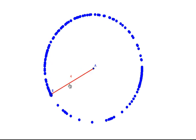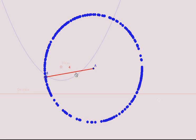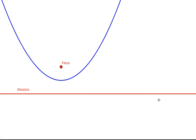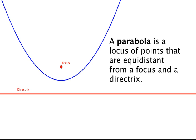Now let's think about a little bit more of a complex example — a different conic, a parabola. In the study of conics, we learn that a parabola is the locus of points that are equidistant from a point that we call a focus and a line that we call a directrix.